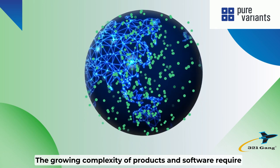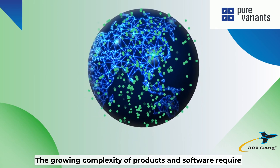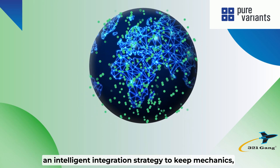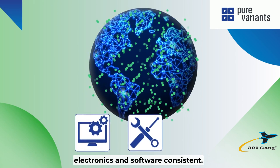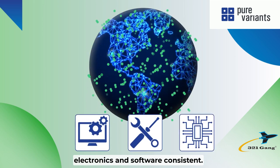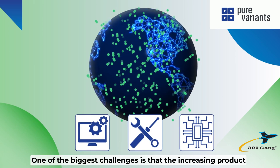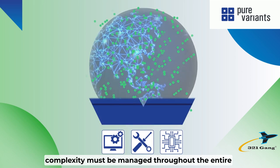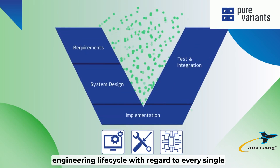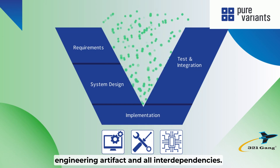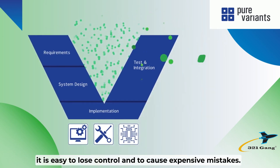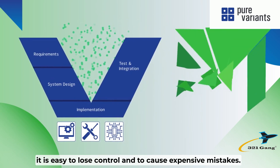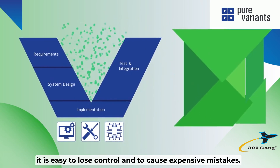The growing complexity of products and software require an intelligent integration strategy to keep mechanics, electronics, and software consistent. One of the biggest challenges is that the increasing product complexity must be managed throughout the entire engineering lifecycle with regard to every single engineering artifact and all interdependencies. Without the right solution, it is easy to lose control and to cause expensive mistakes.